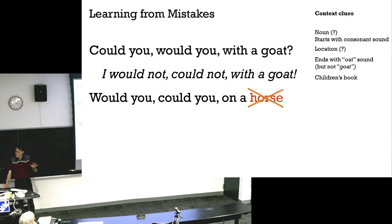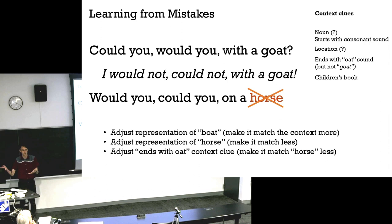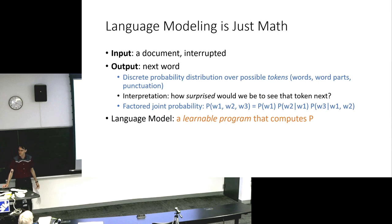So how do we fix this? We can adjust the representation of boat. So boat should match that context better. Horse should not belong in that context as much. And maybe we can even learn about these contexts, like the ends with oat context. Maybe we weren't sure about the difference between the rhyming relationship and the contextually related relationship. This example is helping us tease those apart to make a distinction among things that were otherwise similar. So this is basically how the language model works.